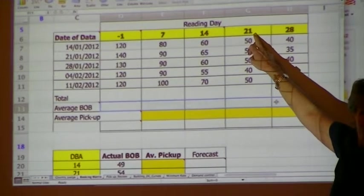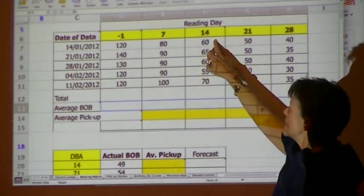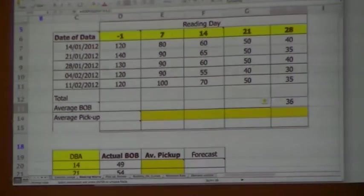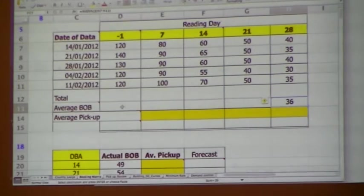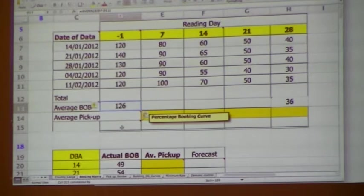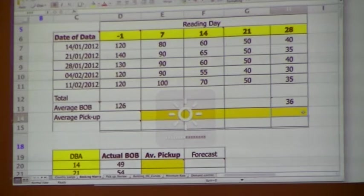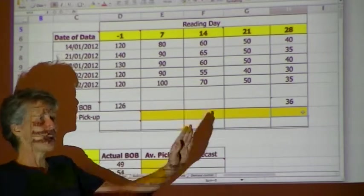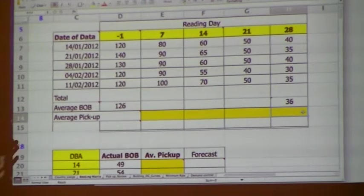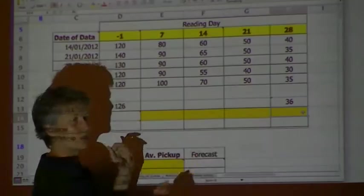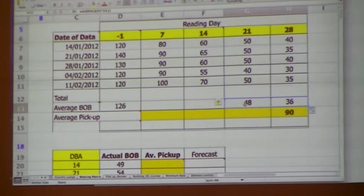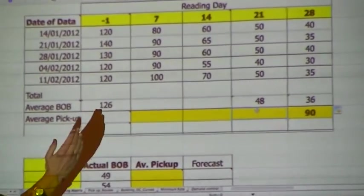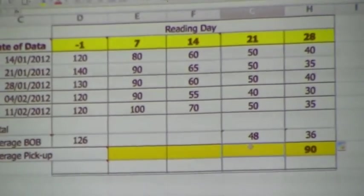So 21 days before arrival, how many rooms did they have on average? 14 days before arrival, what was the average? If we add 120 plus 140 plus 130 plus 120 plus 120 divided by five, we know that on average they ended up with 126. So with that information we can calculate the pickup. We know that if they had 36 bookings 28 days before arrival and they end up with 126, the pickup must be 90. So it's the difference — this number minus that number — that's the pickup. So 21 days before arrival we have on average 48 reservations on the books, so the pickup in the remaining 21 days is going to be 126 minus 48, which gives us our pickup of 178.